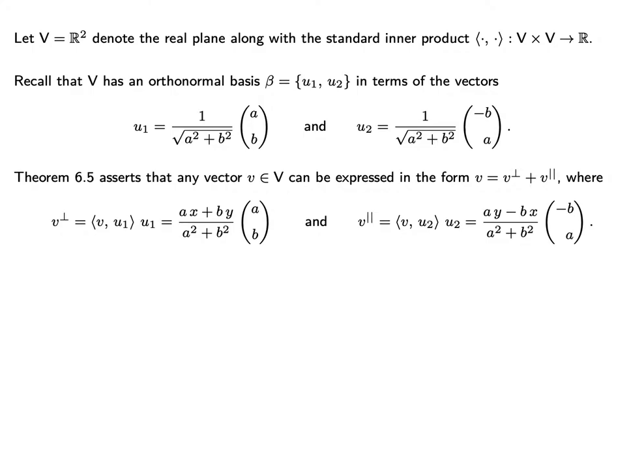Let's denote v_perp as the inner product of v and u1 times the vector u1 — you see this here to the left of your screen. Similarly, we can consider v_parallel, which we define as the inner product of v and u2 times the vector u2. This is on the right-hand part of your screen.